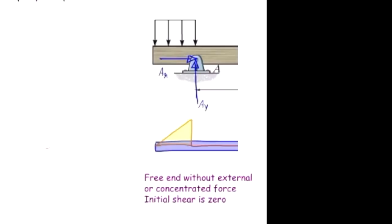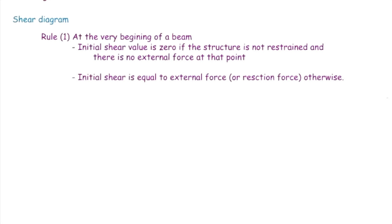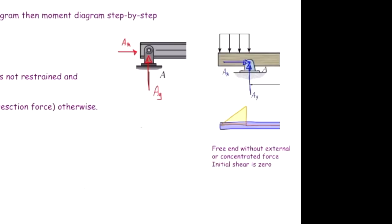The second condition of Rule 1: the initial shear is equal to the external or reaction force otherwise. So if the left part of the beam is restrained, or if there is any external concentrated force at that point, the initial value equals that force. For instance, if the left end has a pin support, the initial shear equals the reaction force at that point.